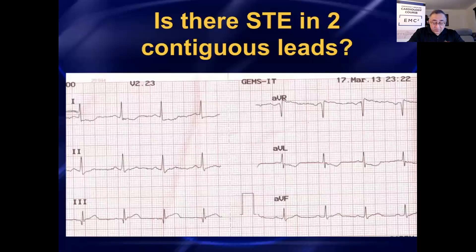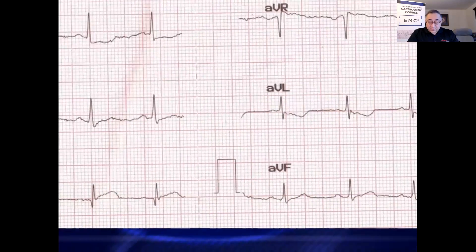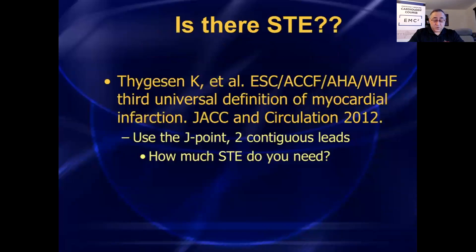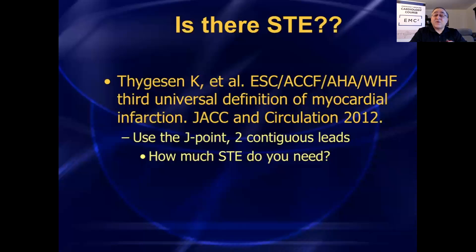So when we look at that first 12-lead ECG, is there ST elevation in two contiguous leads? No, there's really not. Now, how much ST segment elevation do you need? When I was in residency, I learned one millimeter in the inferior leads and two millimeters in the precordial leads — that's not right. Then they said let's make it simple: one millimeter in all leads. That's not correct either. For the past 15 years, the universal definition — a collaboration of cardiologists from the European Society of Cardiology, American College of Cardiology Foundation, American Heart Association, and World Health Federation — defines STEMI as one millimeter of ST elevation in two contiguous leads, but in V2 and V3 it depends on age and gender.